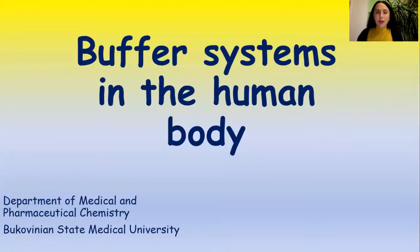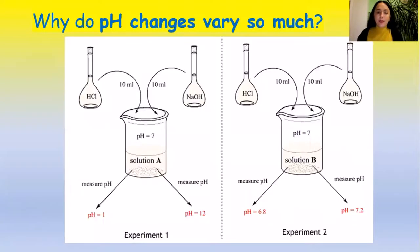Hello everyone! Today I'm going to tell you about buffer systems in the human body. Imagine that you see two beakers filled with colourless liquid solutions, which look the same at first. They even have the same pH of 7. But if the same amount of a strong acid or a strong base is added to each of them, they act completely different.